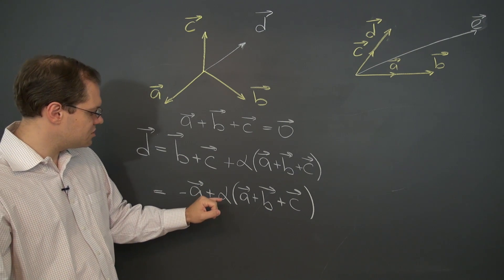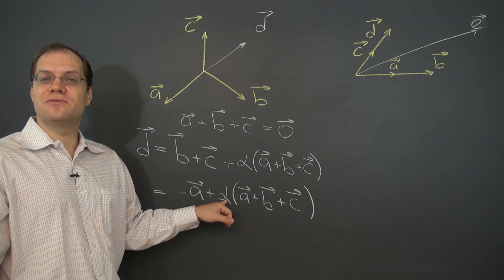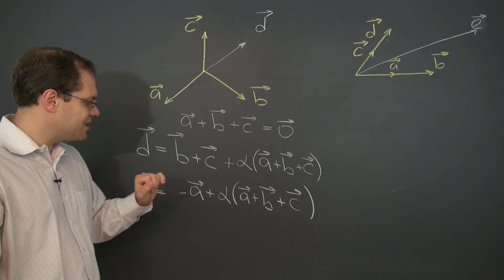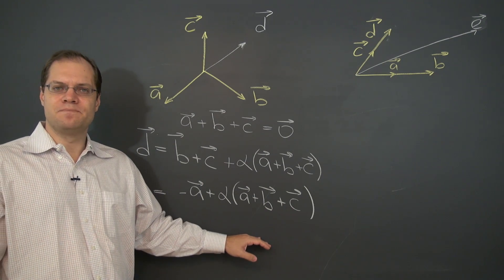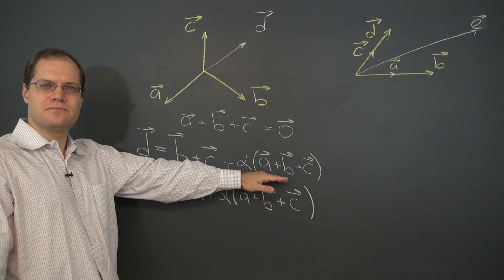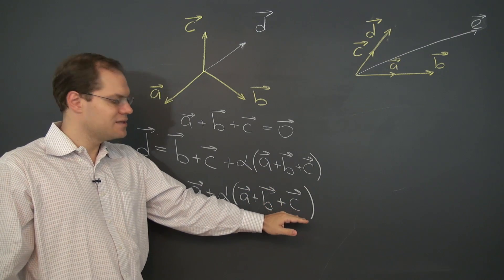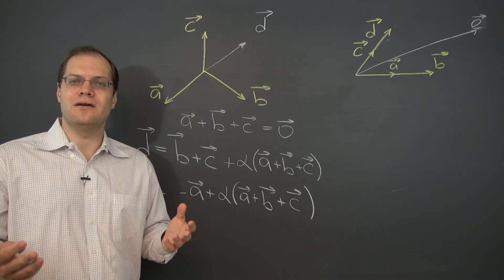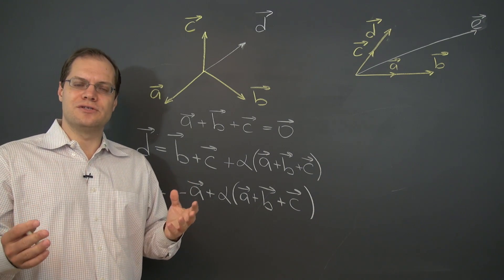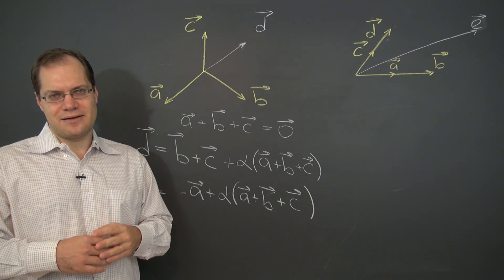And the answer is yes. Just take 11. Alpha equals 11. Then we'll have 10a plus 11b plus 11c. The same linear combination. So this expression represents the same set of linear combinations as this expression. There's just more than one way of capturing all of those linear combinations as mathematical expressions.